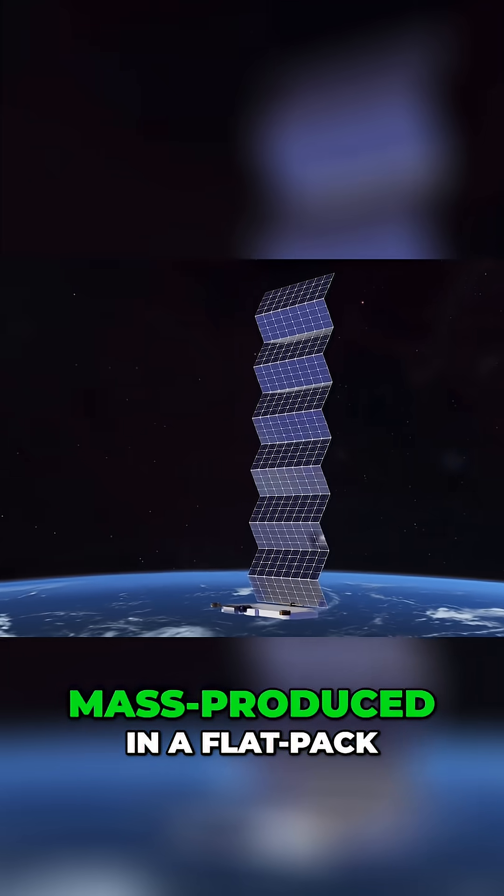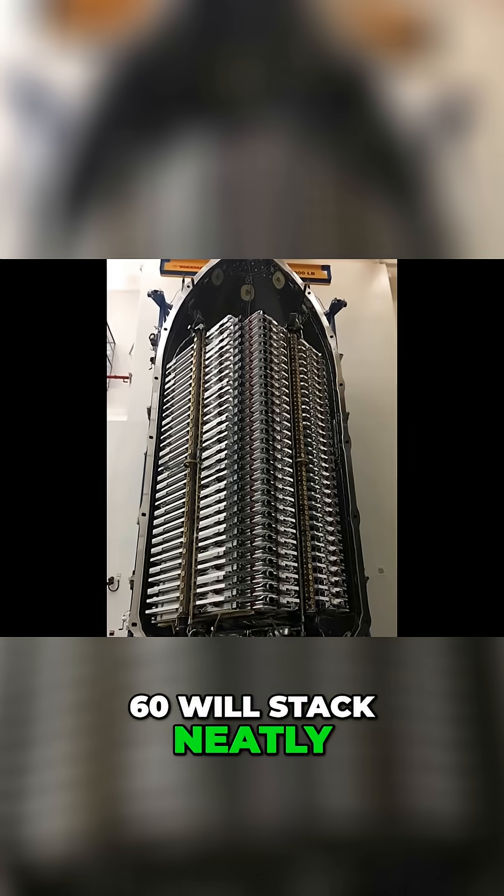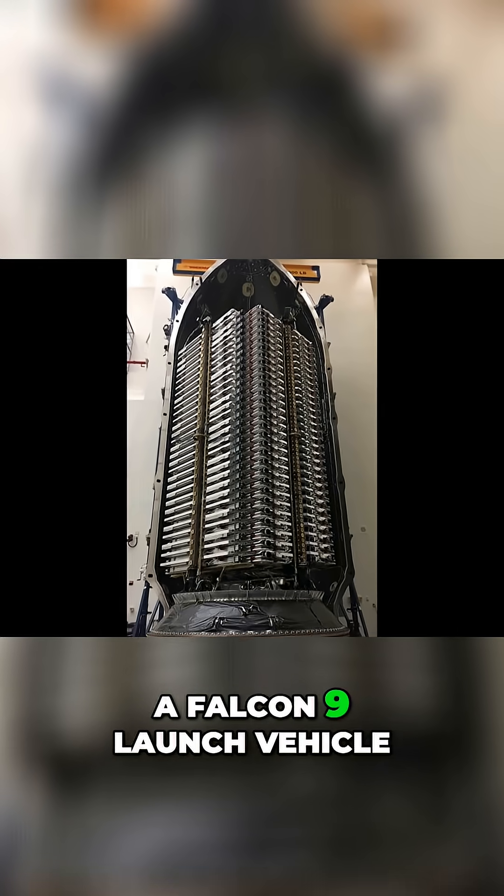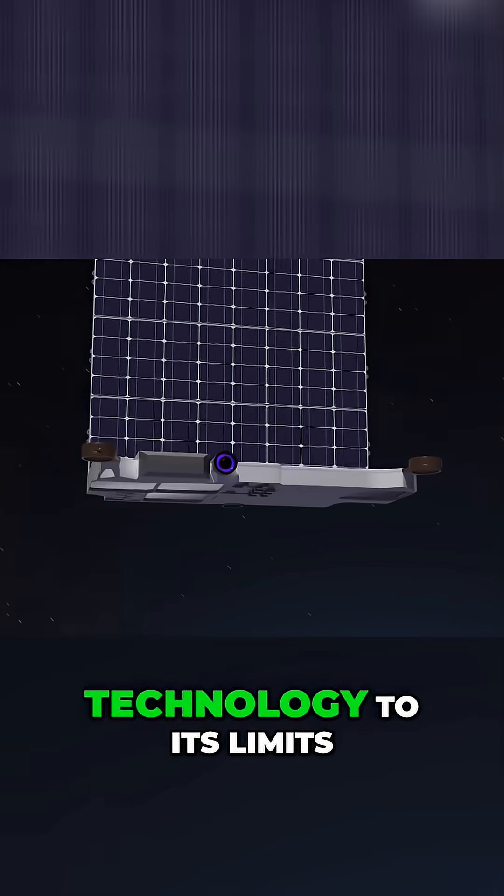The satellites are being mass-produced in a flat-pack form with a single solar panel. 60 will stack neatly within the fairing of a Falcon 9 launch vehicle. The Starlink satellite design is pushing the latest technology to its limits.